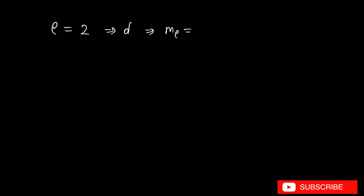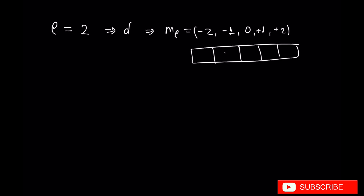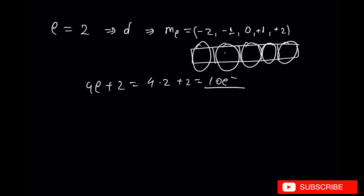Let's move now to L equal to 2, which represents d orbitals. d orbitals have ML numbers starting from minus L up to 0 up to plus L, so minus 2, minus 1, 0, 1, and 2 — which means d orbitals contain 5 atomic orbitals and can contain a maximum of 10 electrons. We are not going to show the three-dimensional shape of d orbitals because they are computer-made based, so if you remember p orbitals and s orbitals, that's fine for general chemistry.